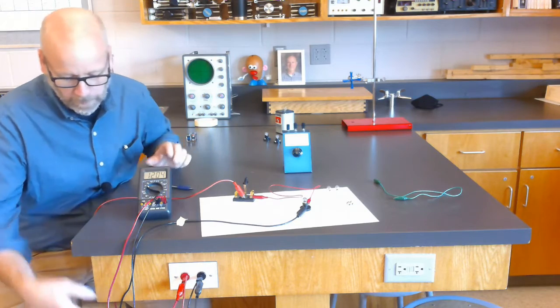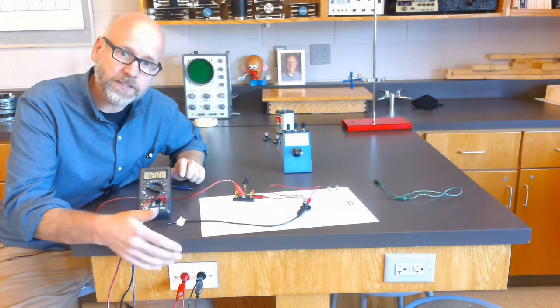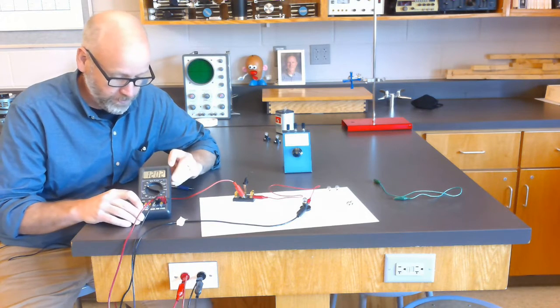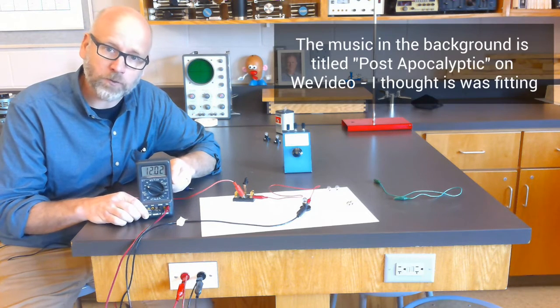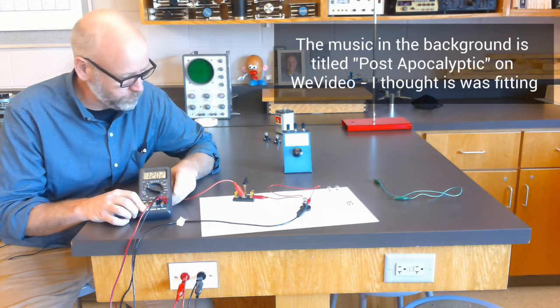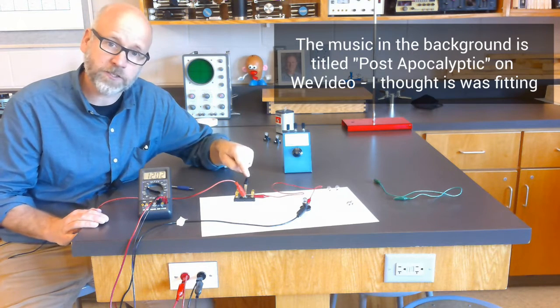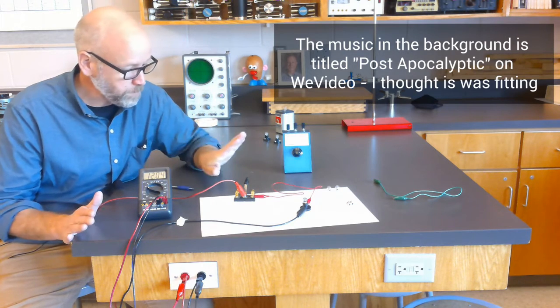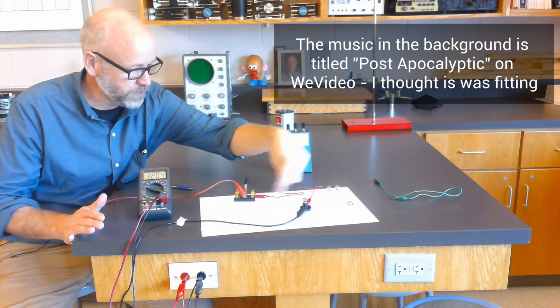All right, so here's what I have. We are letting the class's DC power supply stand in for a car battery. Right now it's reading about 12 volts, 12.02 volts. I have my circuit hooked up to a switch. Right now there's no current flowing because the switch is open.